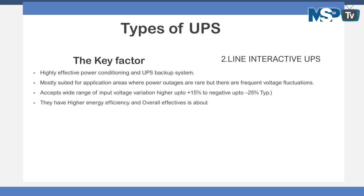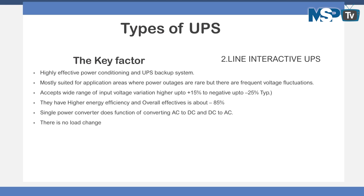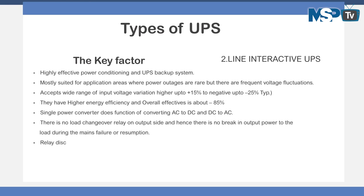Line interactive UPS units have higher energy efficiency, with an overall effectiveness of about 85%. A single power converter performs both the AC-to-DC and DC-to-AC conversion. There is no load changeover relay, and hence there is no break in output power to the load during mains failure or resumption. A relay disconnects the UPS from mains during mains failure conditions.